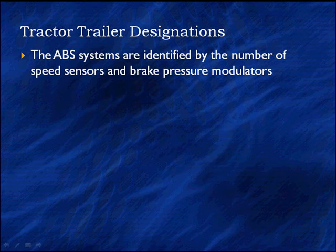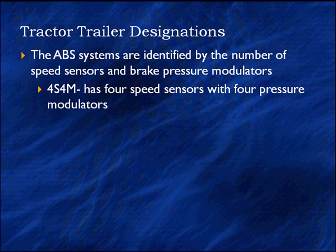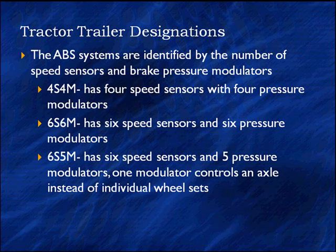Tractor-trailer ABS systems are identified by the number of speed sensors and brake pressure modulators. The first number with 'S' tells you how many speed sensors are used; 'M' is the number of brake pressure modulators. For example: 4S/4M has four speed sensors and four pressure modulators; 6S/6M has six sensors and six modulators; and 6S/5M has six sensors and five modulators, where one modulator controls an entire axle instead of individual wheel sets.